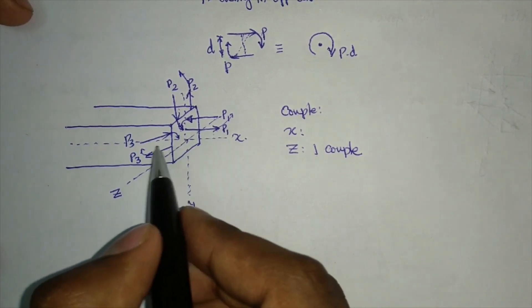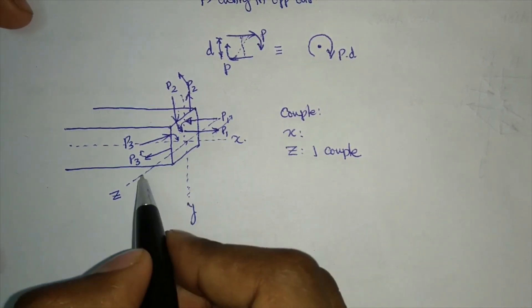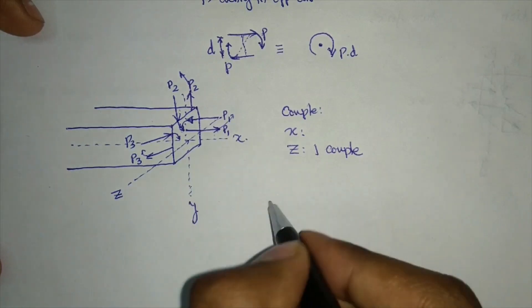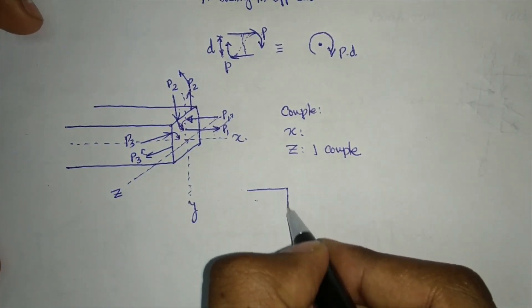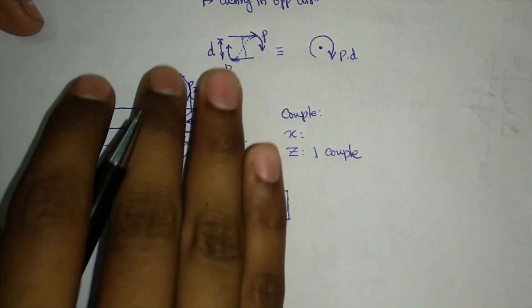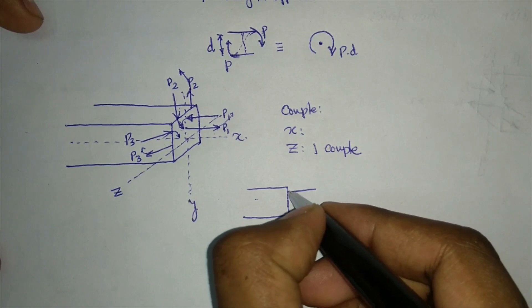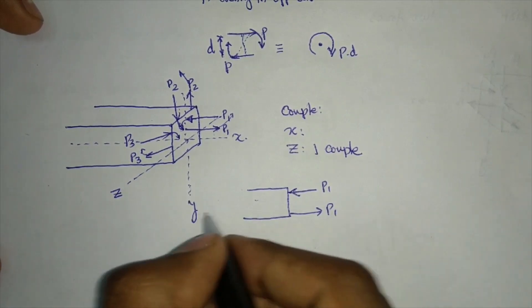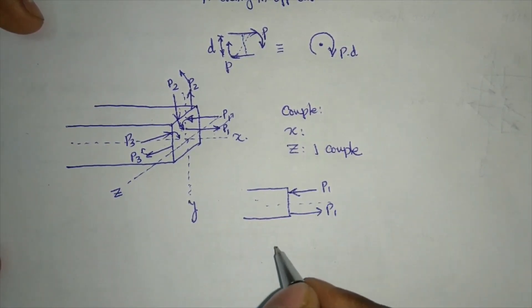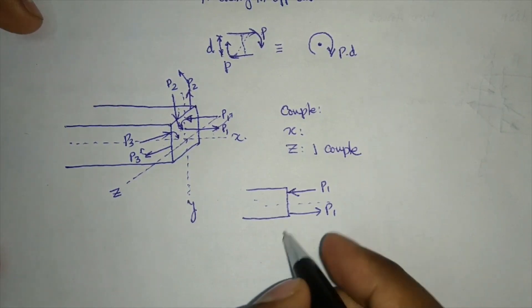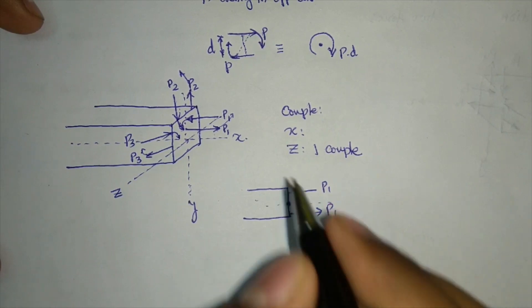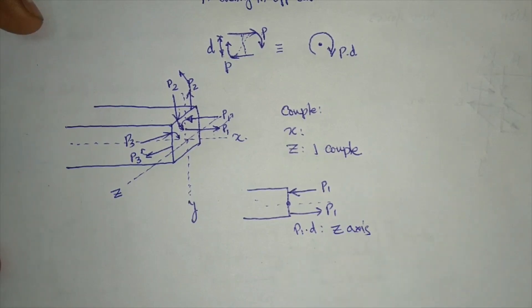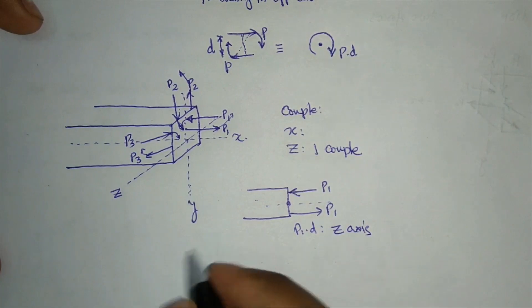Taking forces acting along the x-axis from the front view, there is a force P1 here and another P1 there. These forces are along the x-axis, so their couple axis will be along the z-axis. Therefore, P1 times D will generate a couple along the z-axis.